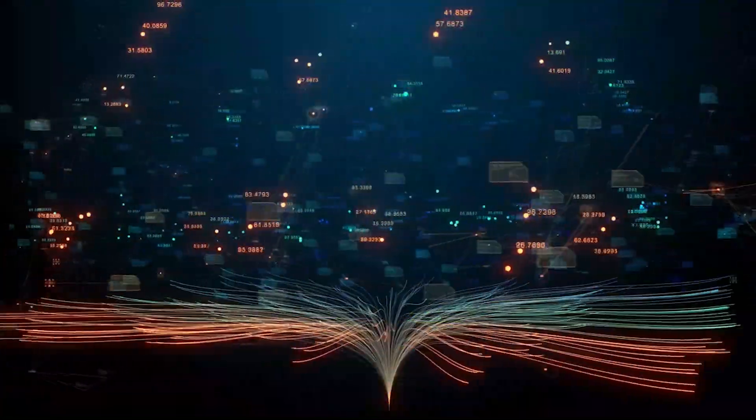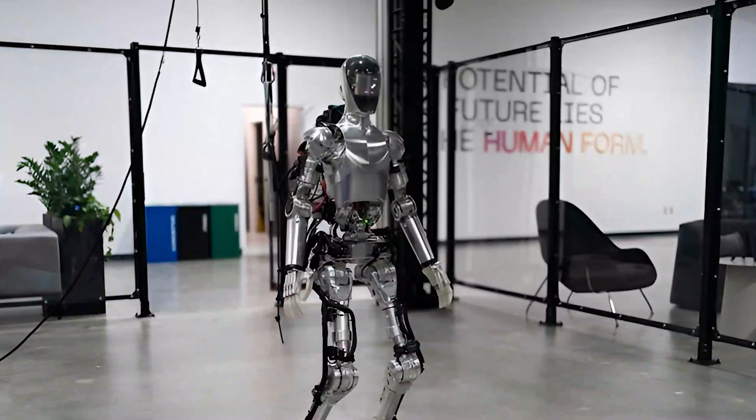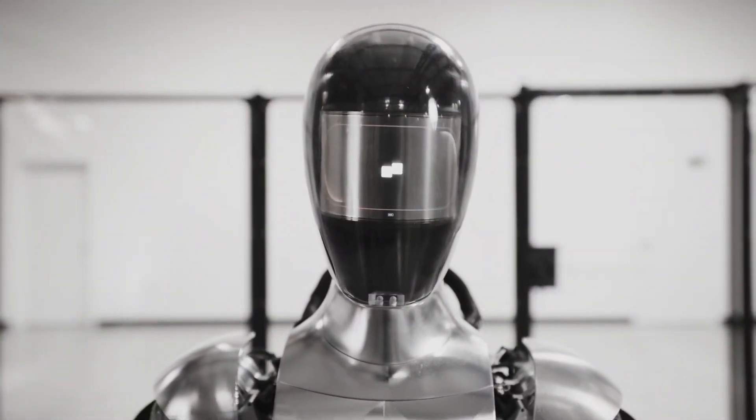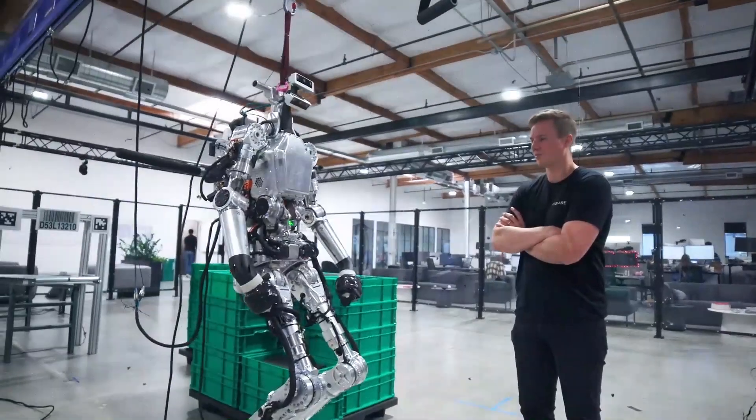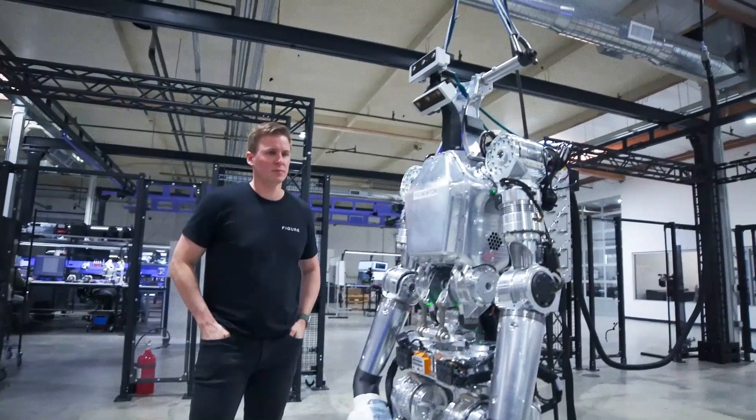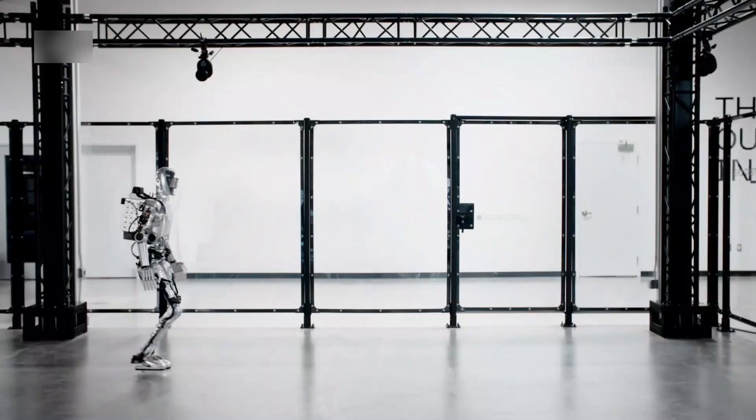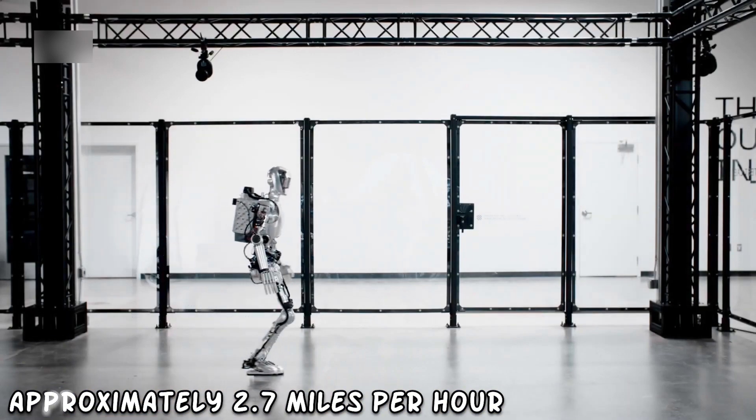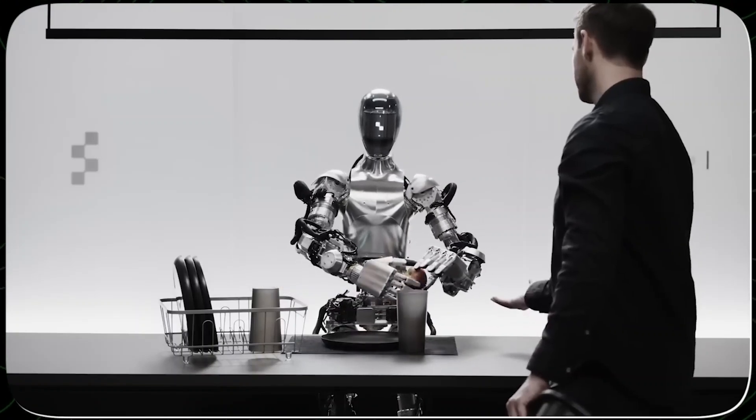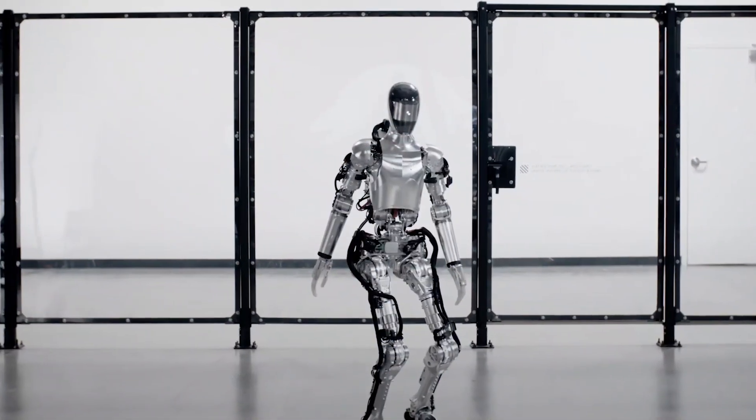Figure 01's precision and agility, powered by advanced neural networks, set it apart as a frontier in humanoid robotics. The demonstration highlights its remarkable speed and accuracy in executing actions, ensuring low latency responses that enable it to navigate various environments with ease and efficiency. Its robust build and payload capacity of up to 44 pounds, combined with a swift speed of 1.2 meters per second, approximately 2.7 miles per hour, showcase its potential for diverse tasks with exceptional efficiency, from household chores to industrial applications.